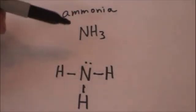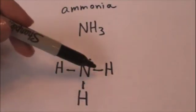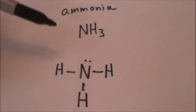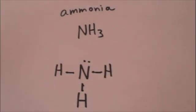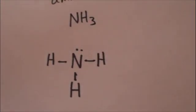So that now nitrogen has its complete octet: two, four, six, eight valence electrons. And hydrogen has its complete duet with its single bond. And this follows the rules that nitrogen wants to form three bonds with one lone pair.